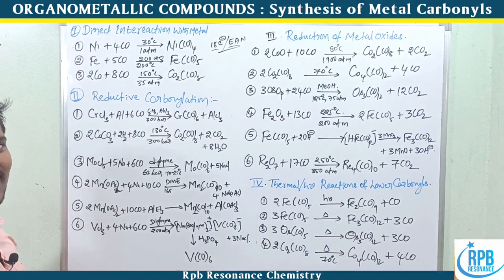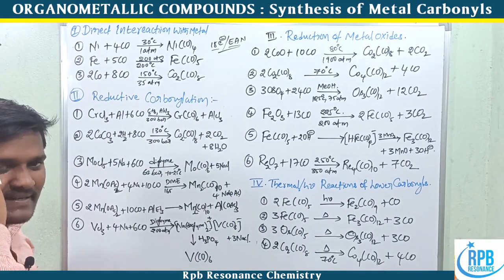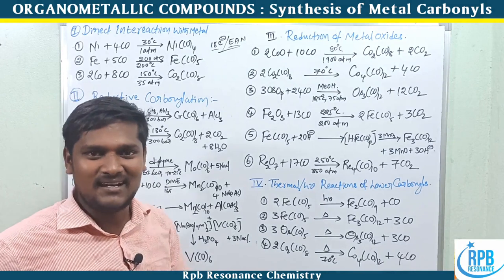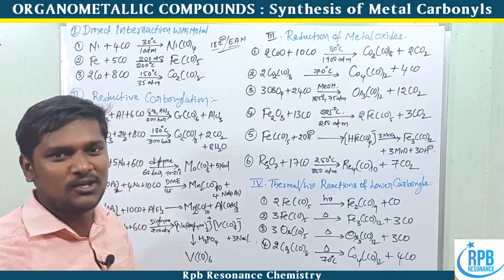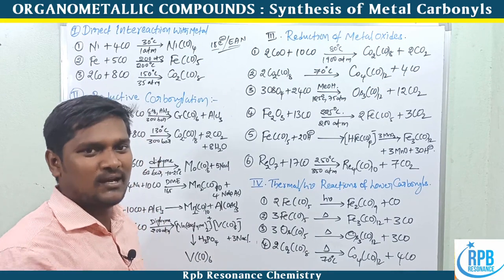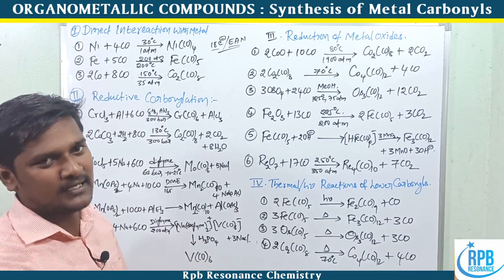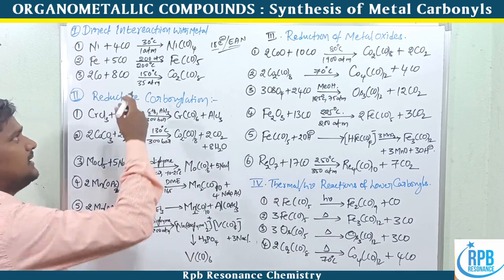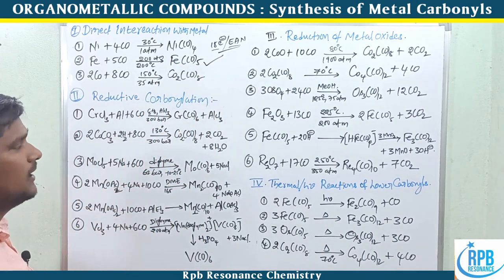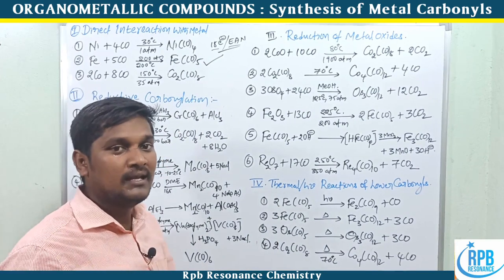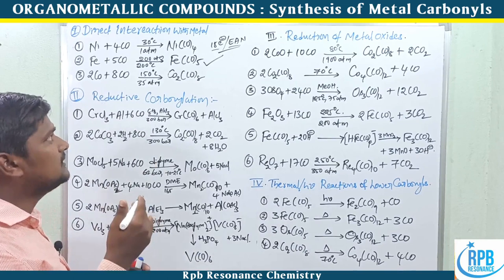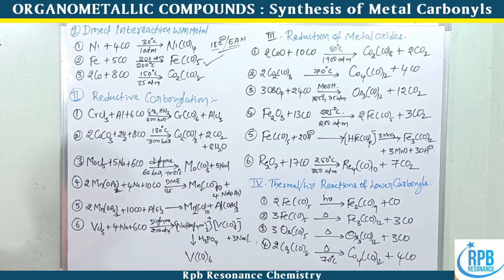For iron, which is s²d⁶ with 8 outer electrons, we need 10 electrons from ligands. Each carbonyl donates 2 electrons, so five carbonyls donate 10 electrons: 8 + 10 = 18. This gives Fe(CO)5, but it requires high conditions — 200°C temperature and 200 atmospheres pressure.